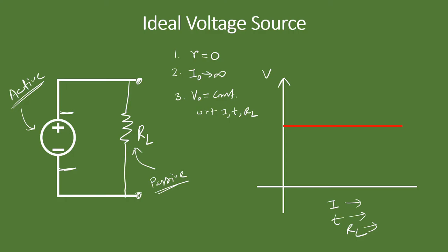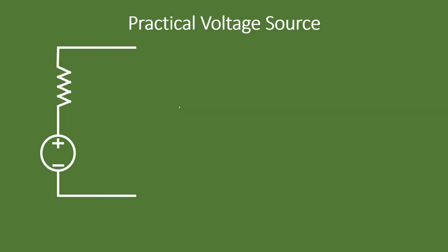In the case of a practical voltage source, these three points differ. First, there is a small resistance connected in series with the ideal voltage source, so internal resistance is not zero — it will have some value, maybe in the range of milliohms to tens of ohms. In practice, values of two or three ohms for a small cell, or around 10 ohms for a bigger cell, are common.